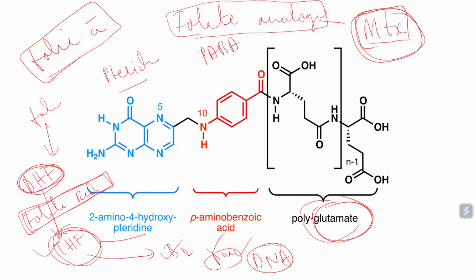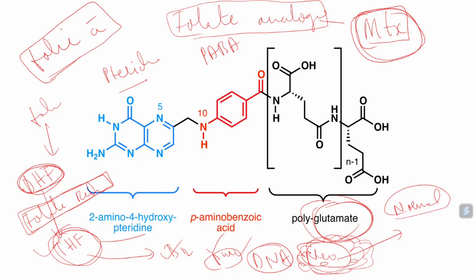Neoplastic cells proliferate continuously — they don't have any periodic timing. But normal cells will only divide periodically, whenever cell necrosis or apoptosis occurs. To stop the division of neoplastic cells, we give methotrexate and other cytotoxic drugs. However, these drugs will also show action on normal cells — they decrease cell synthesis in epithelial tissue, bone marrow, and GI tract where germinating cell density is high.